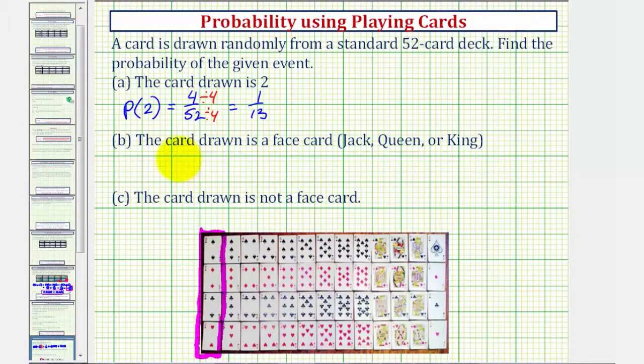Next, we want to determine the probability that the card is a face card, meaning it's a Jack, Queen, or King. The probability of a face card equals the number of face cards divided by the total number of cards.